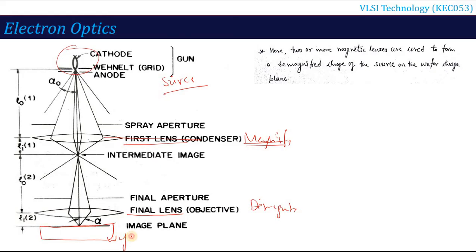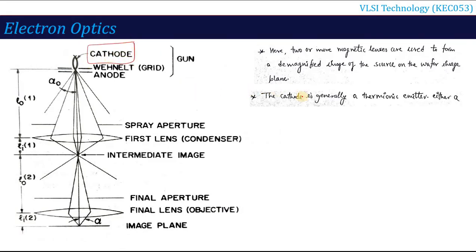This is the wafer plane — this is the wafer — and the image has to reach there. Two or more magnetic lenses are used to form a demagnified image of the source on the wafer image plane. Starting from the top, there is a cathode, which is generally a thermionic emitter — either a tungsten hairpin or a pointed lanthanum hexaboride (LaB6) rod — which is responsible for generating the electron beam.